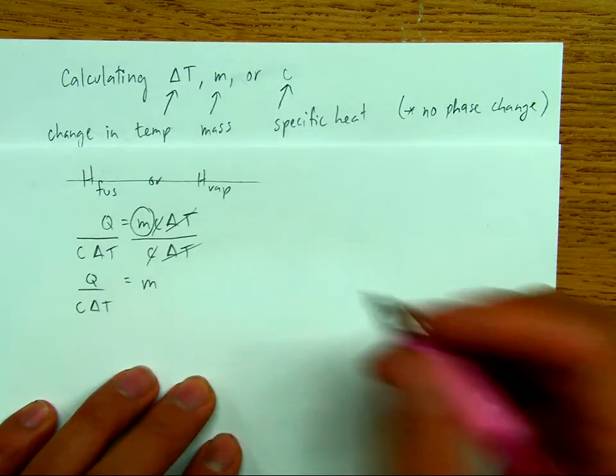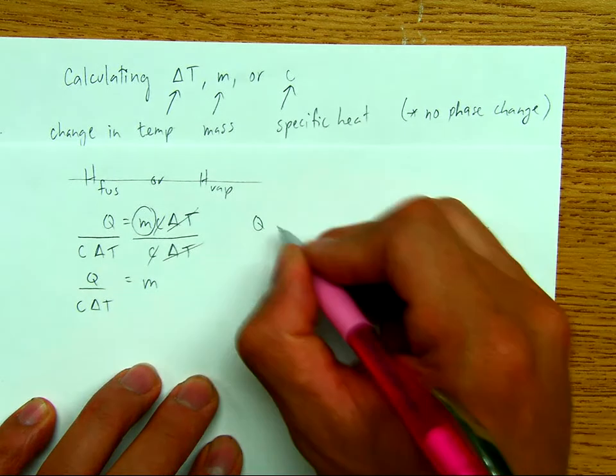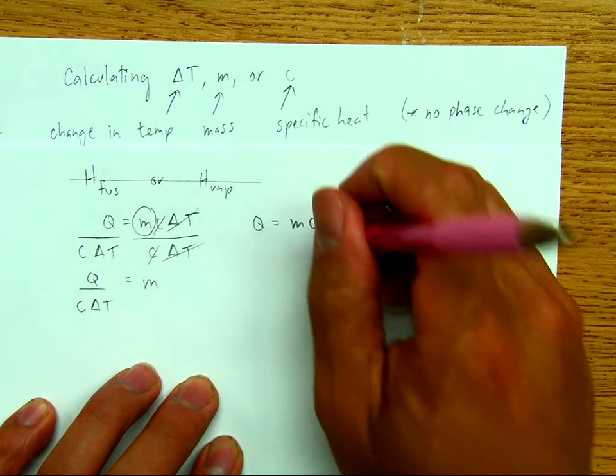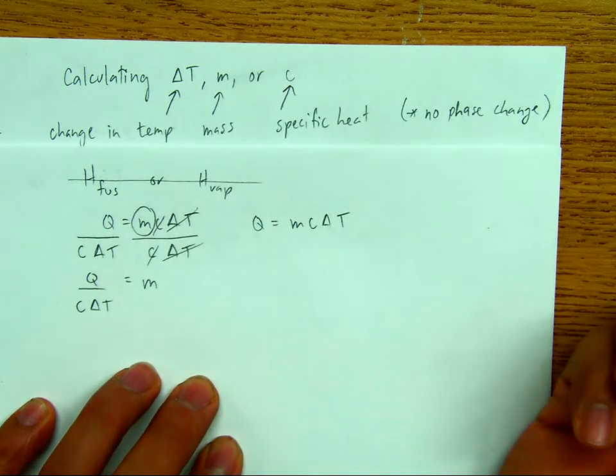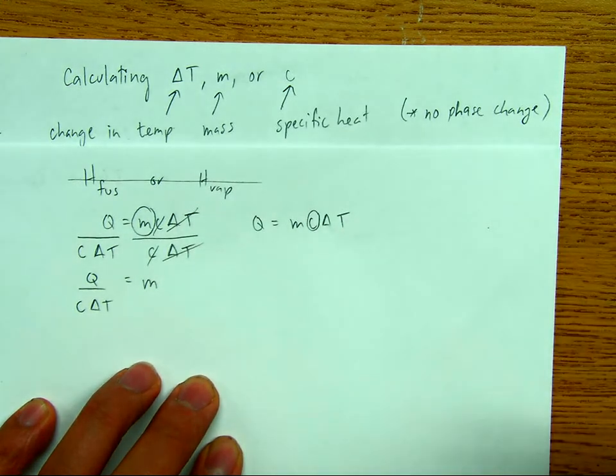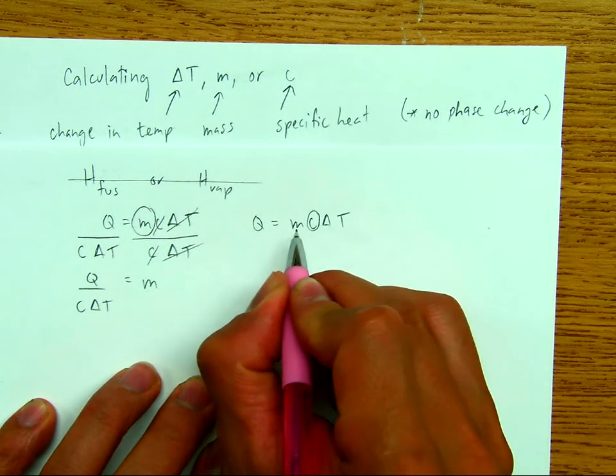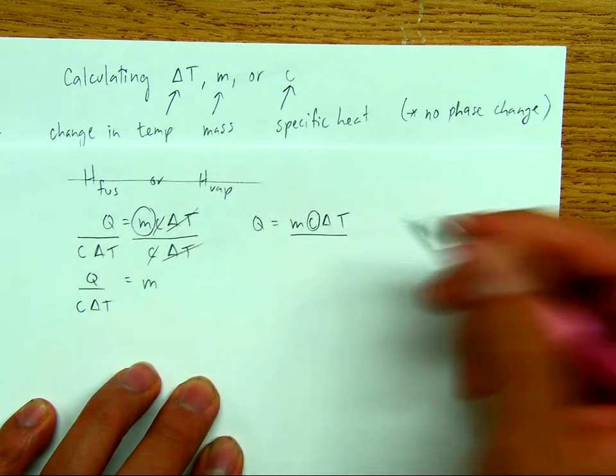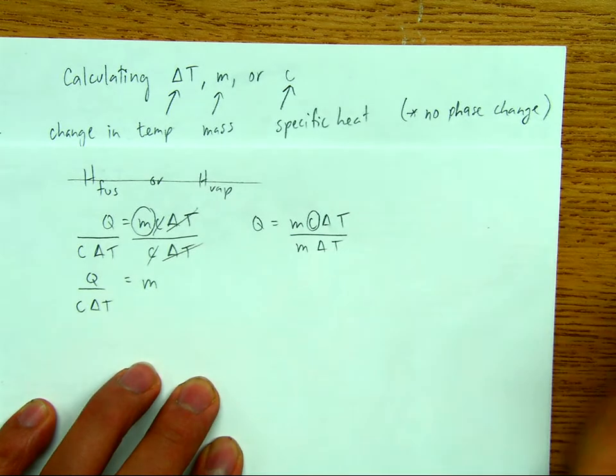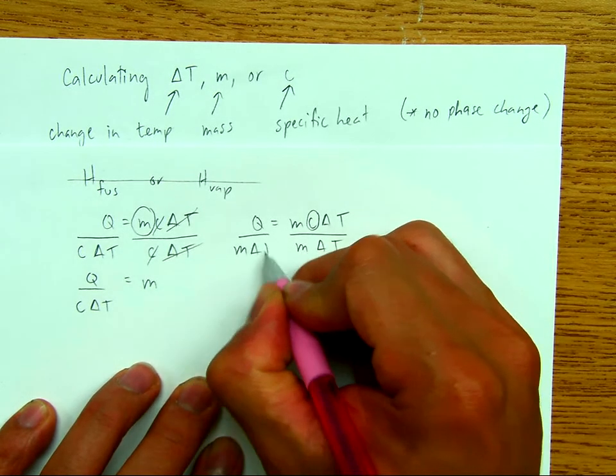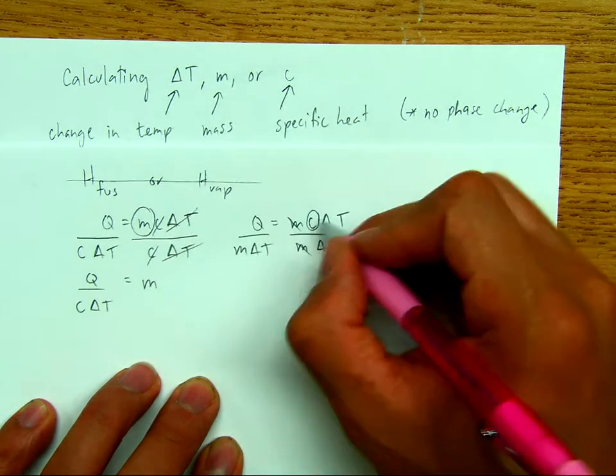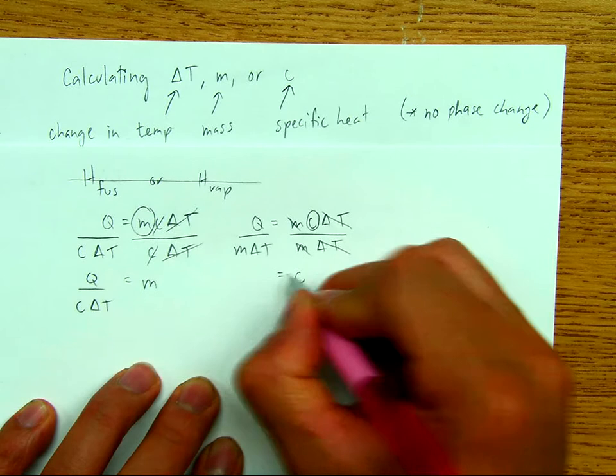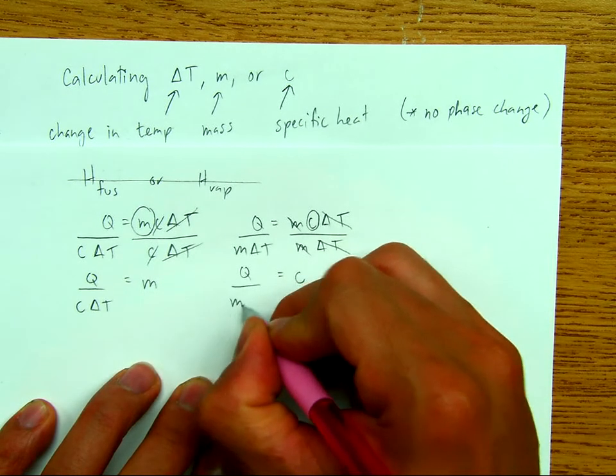Now, let's say we have the same thing, right? We don't have a phase change. And we're trying to isolate for c. So as you can see, we're going to do the opposite order of operation. So right now, it's multiply by m and delta t. So we'll divide both sides by m and delta t. The m's will cancel. The delta t's will cancel. And you're left with c, which is the specific heat, is equal to q over m and delta t.